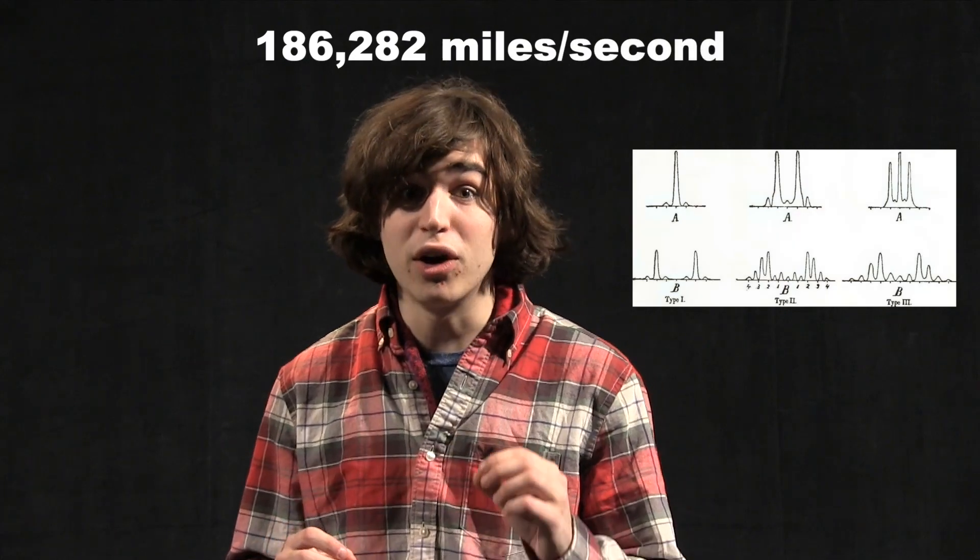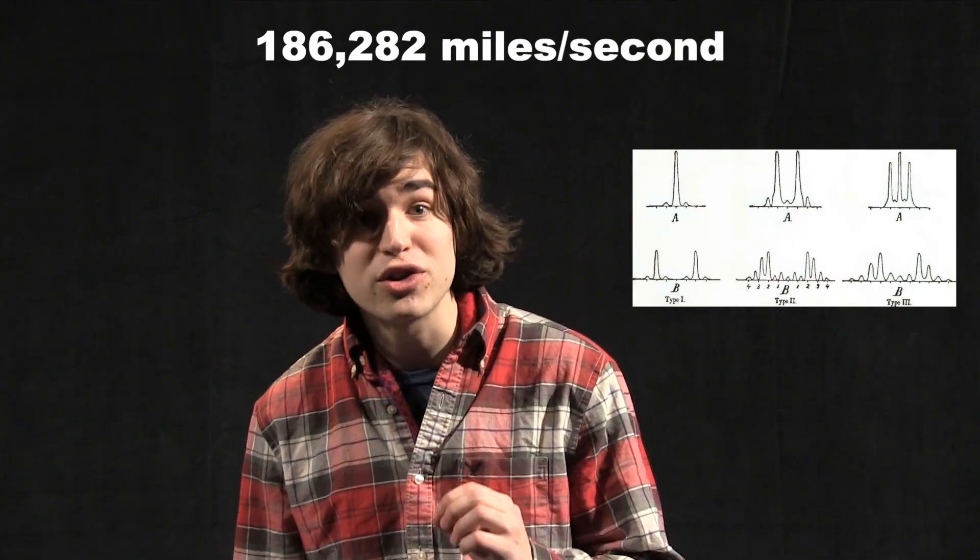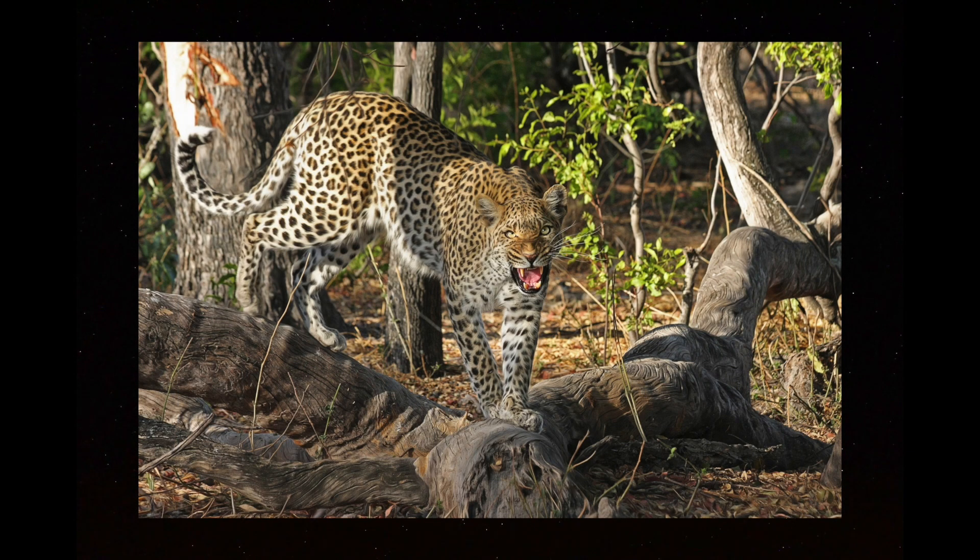Pulsars are a great example of how regular patterns are presented to us because of the fixed laws of nature. Here's another one. The speed of light in a vacuum is 186,282 miles per second. But did you know that it's possible to slow down the speed of light so much that a cheetah could outrun it?